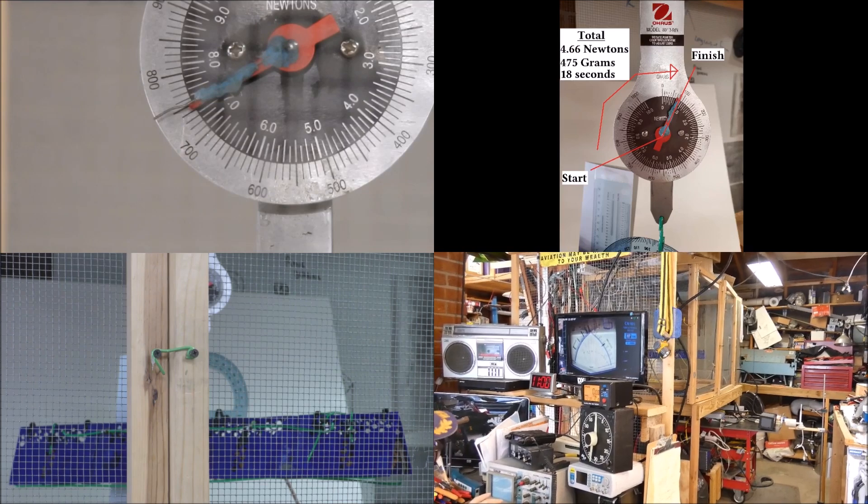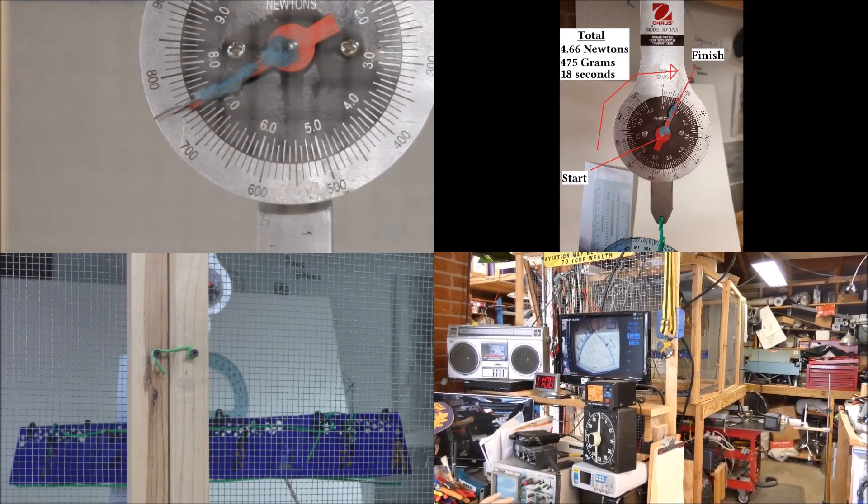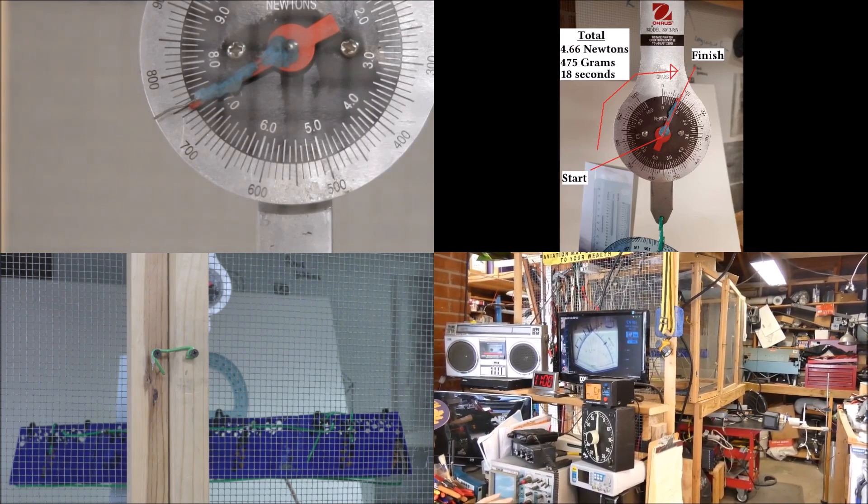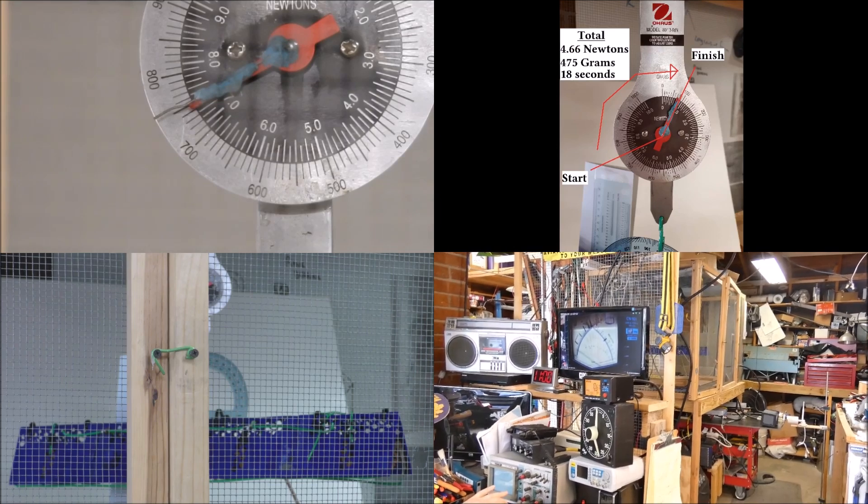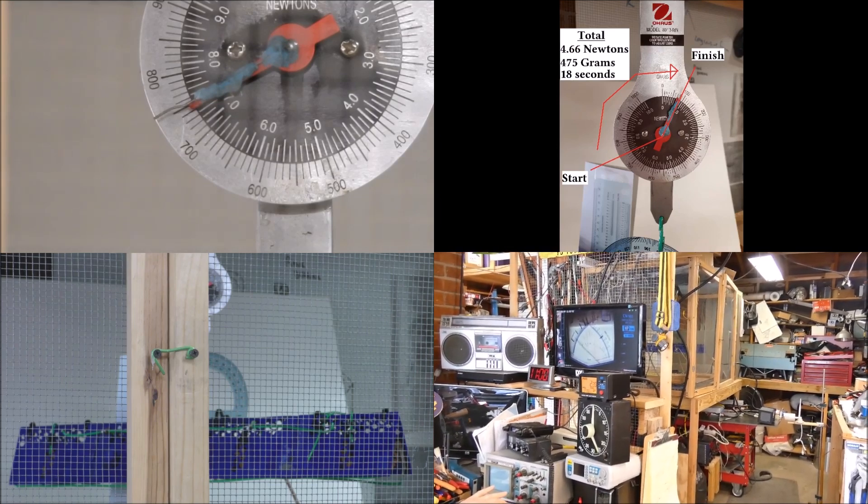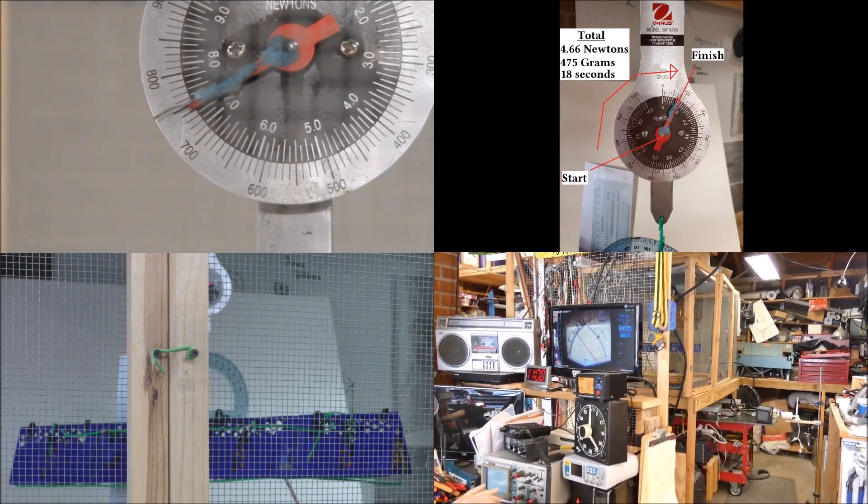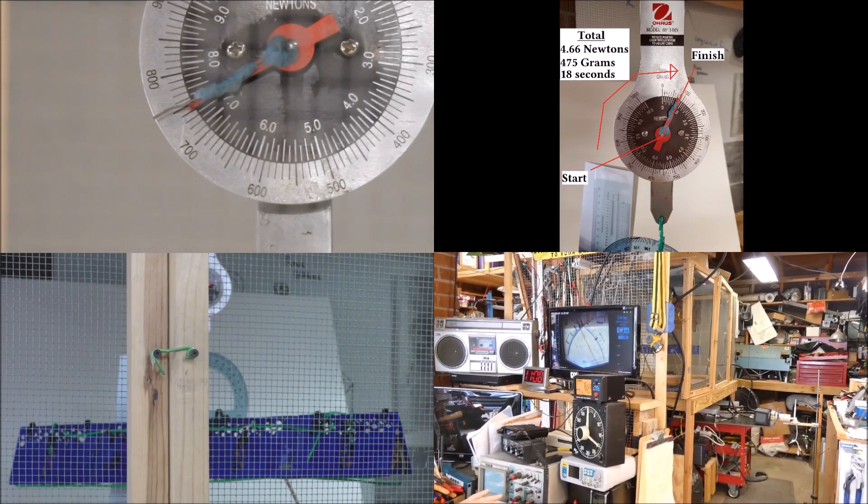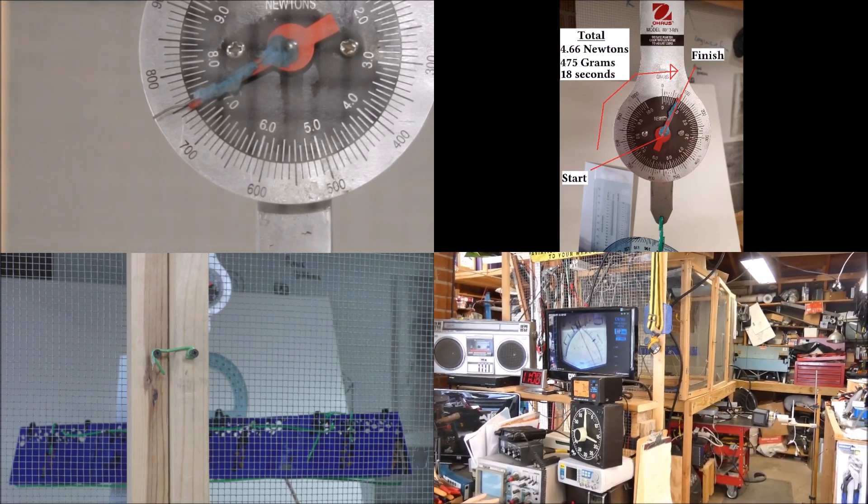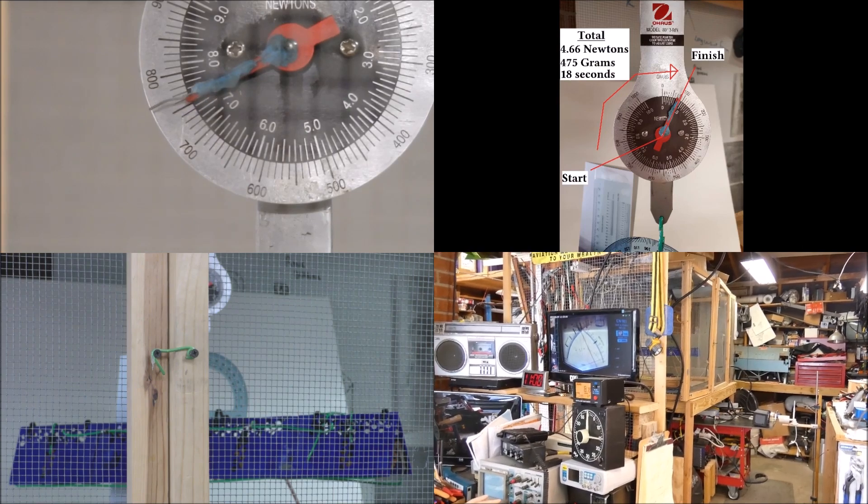This scene has three videos captured from three different cameras during the run and shown at real time. In the top left we have the up close video of the scale. In the bottom left we have the full picture of the engine, and in the bottom right we have the camera that I'm holding from the very back of the lab.